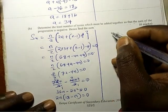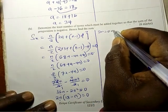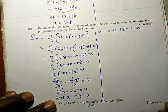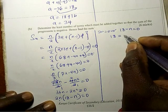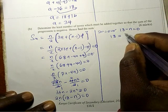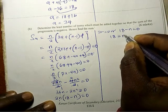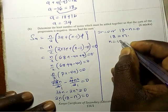So this tells us that 2n is equal to 0, or 18 minus n is equal to 0. So 18 is equal to, okay, 18 is equal to n. So n equal to 18.